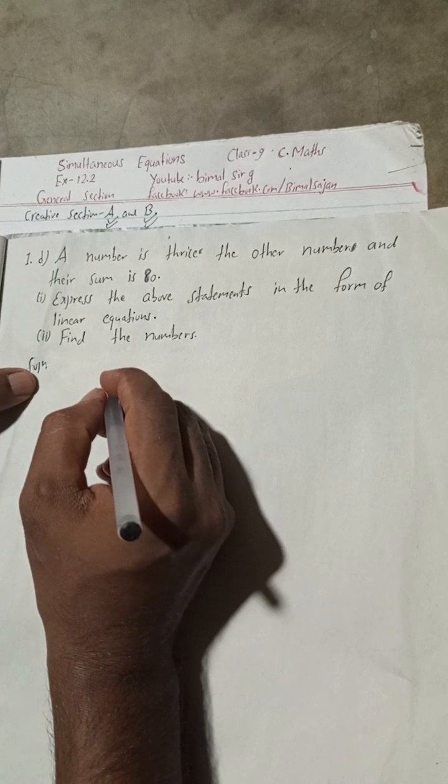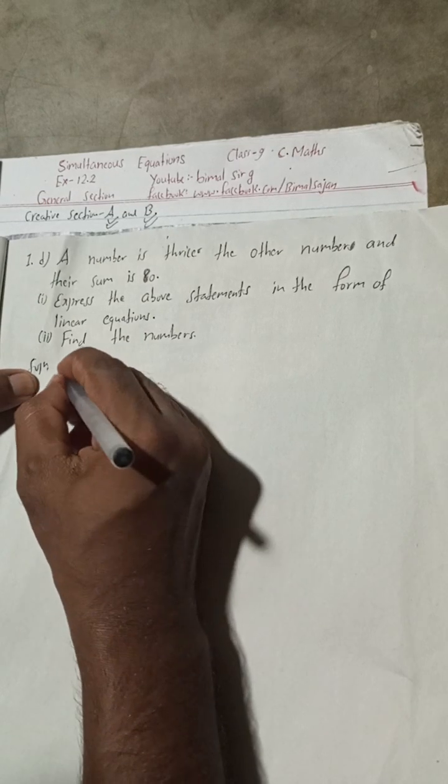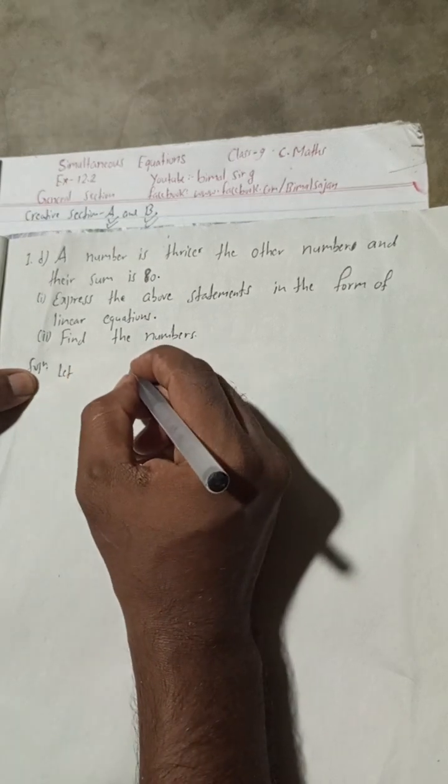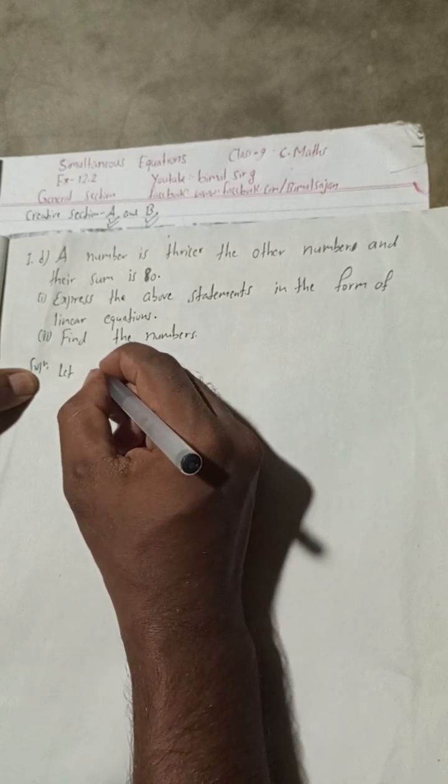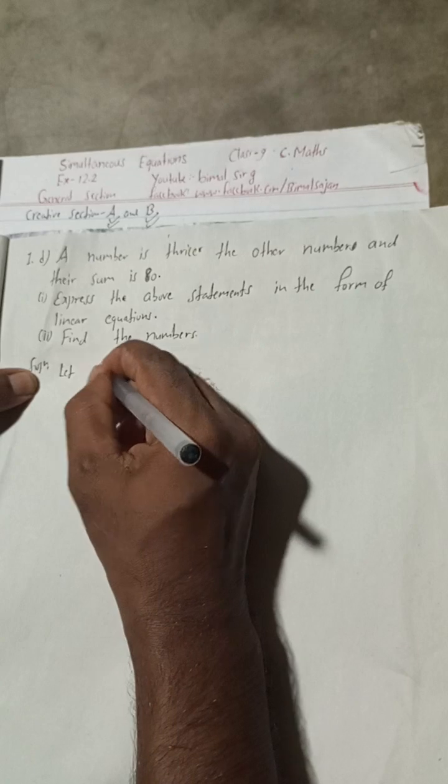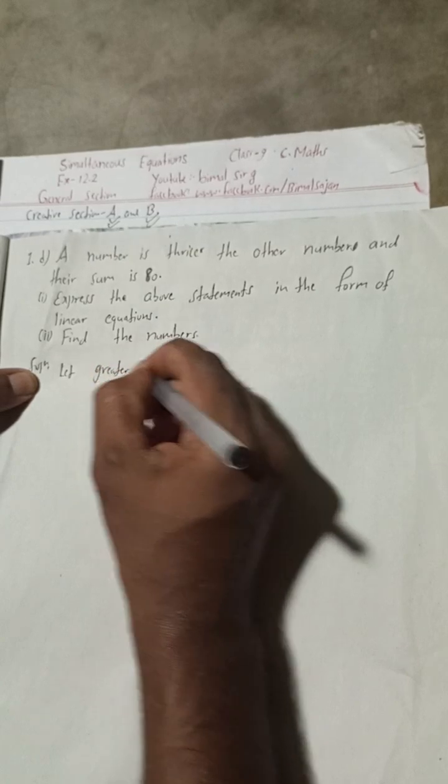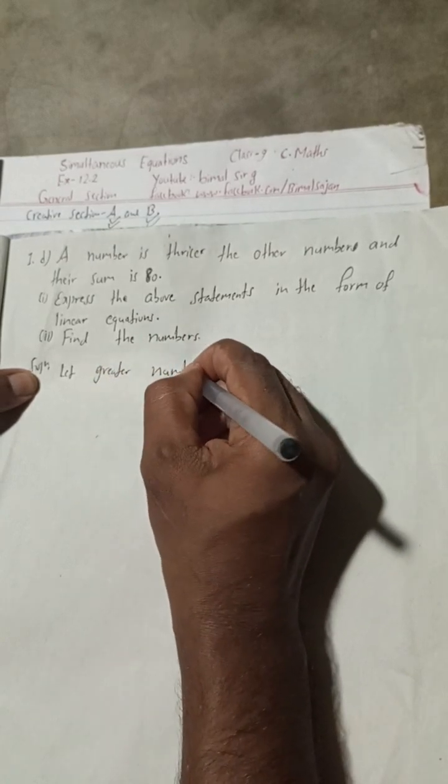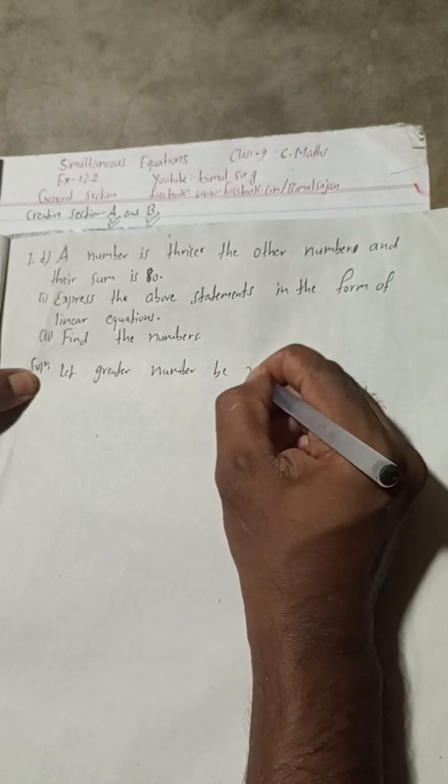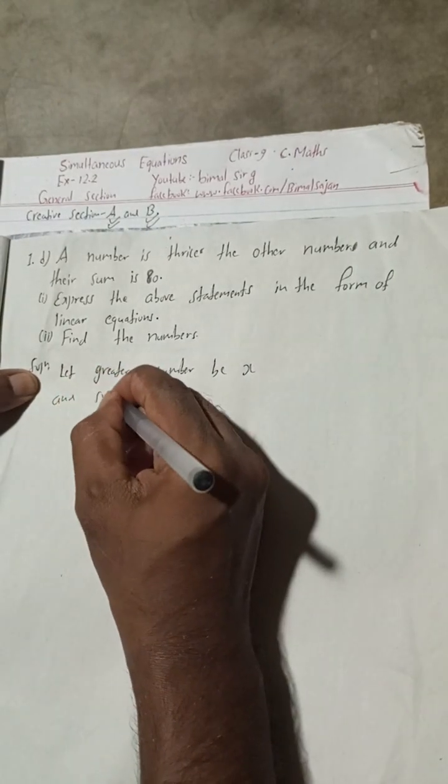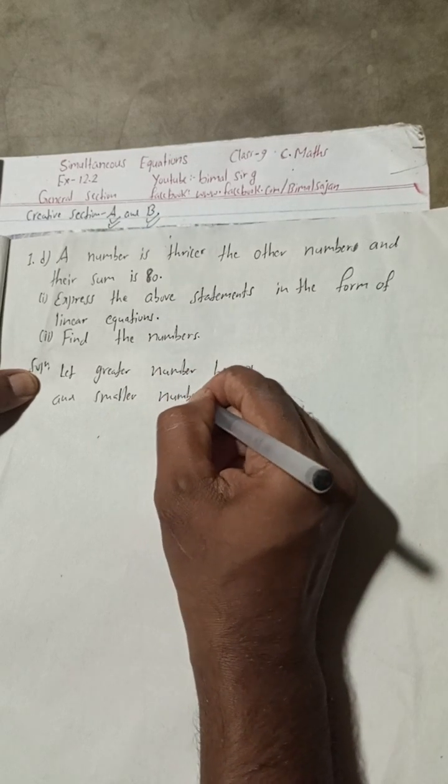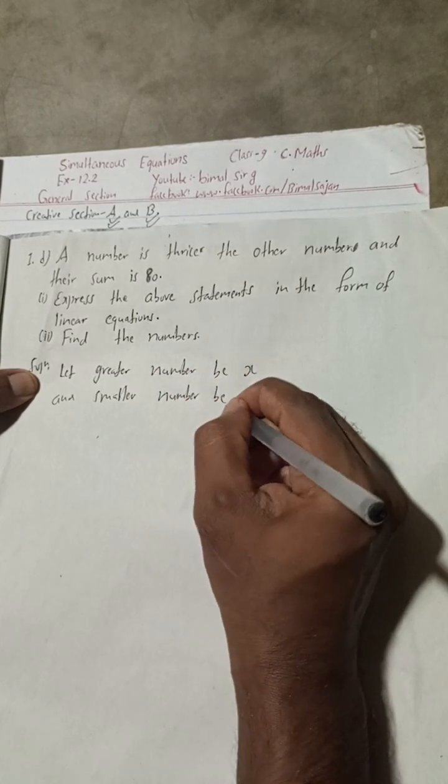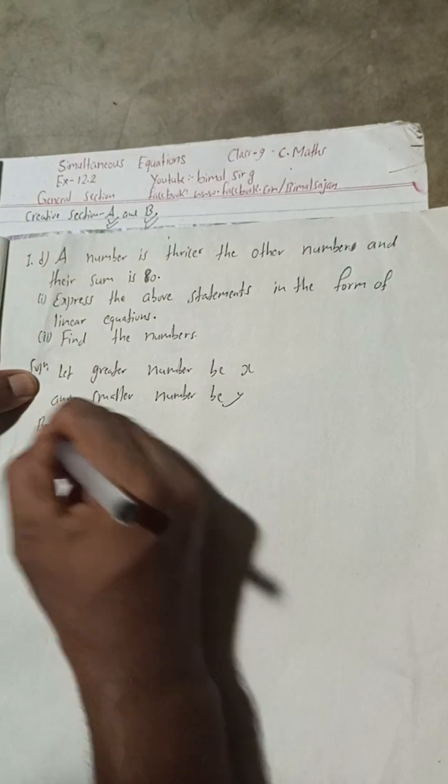A number is thrice the other number. Let the greater number or one number be X, and the smaller number be Y.